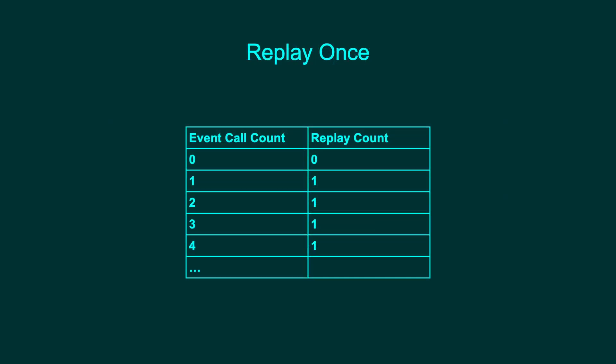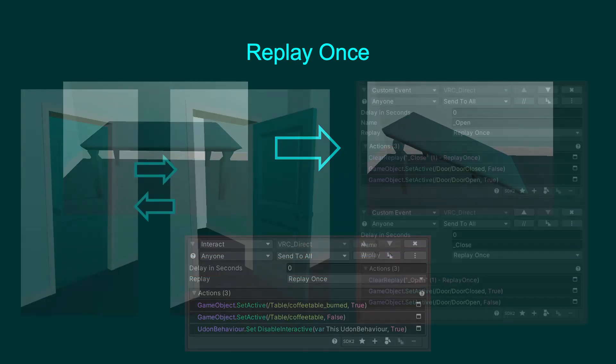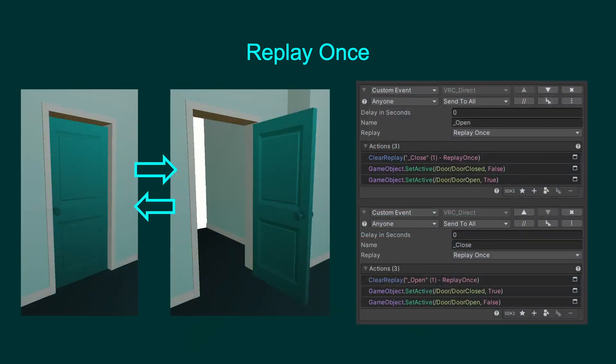Replay Once will save if the event has fired at all and replay it one time for users who join after. This can be used for one-time events, or used to set state in a multi-state system.